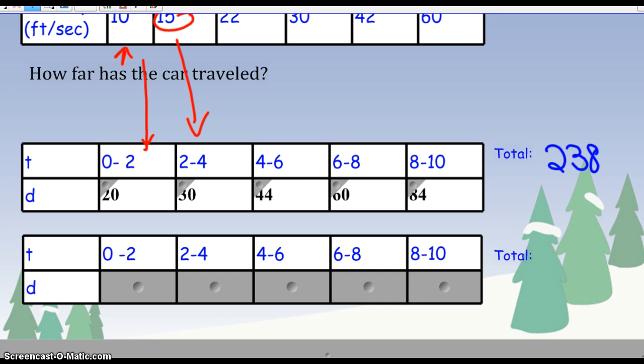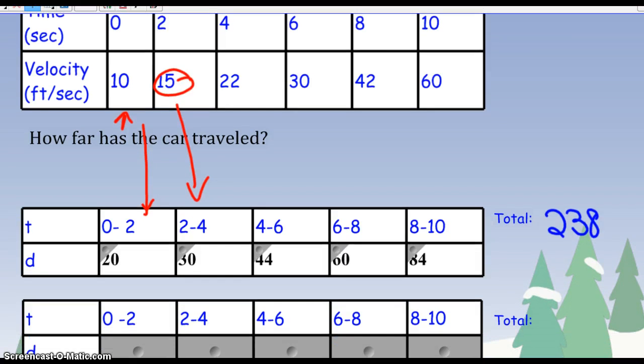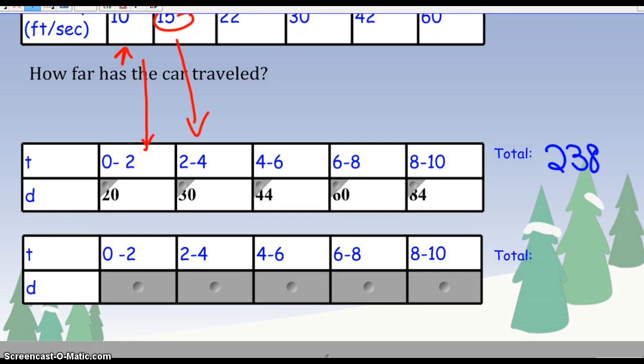Now, that may not be what happened. I could have been going 10 right at 0 and then switched over to the 15 at 0.01. I don't know. So now I'm going to look at it and say, well, what if for the first 2 seconds I was going 15? Well, then I've accumulated 30, and then I got the 44, and then the 60, then the 84, and then using the 60 for the last 2 seconds, now I went 120. So that total is 338. Big difference there looking at what the speeds were. We have one that looks like a very low estimate and one that looks like a higher estimate.